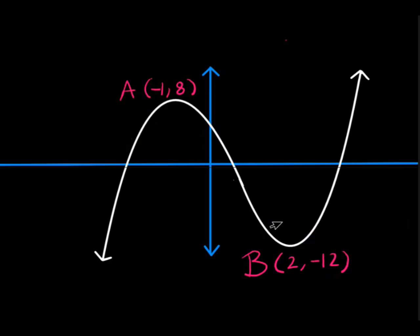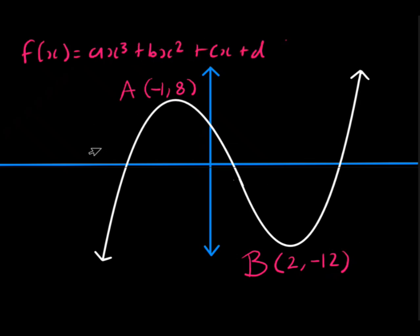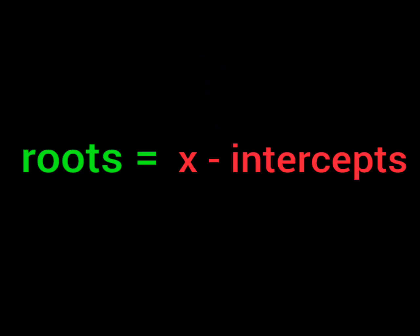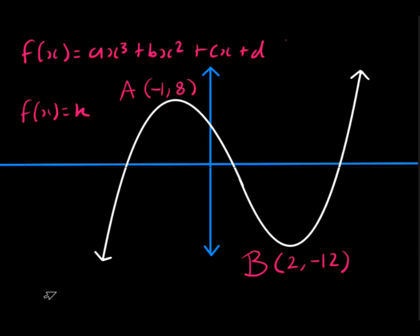Let me use this particular graph to explain the situation. Let's say you're given this particular graph — let's say it's f. So, f(x) = ax³ + bx² + cx + d. You're given this particular graph and let's say they ask you for which values of k will the equation f(x) = k have two distinct roots. First of all, what are roots? Roots are your x-intercepts. This particular graph has three different x-intercepts — in other words, it has three distinct roots.